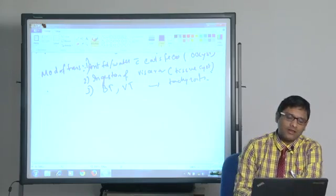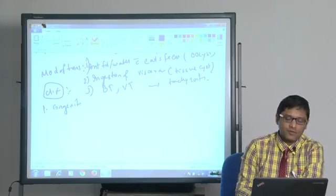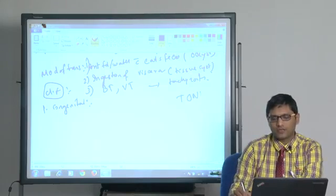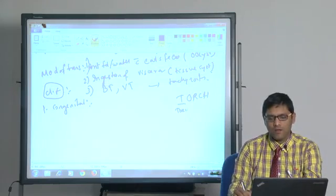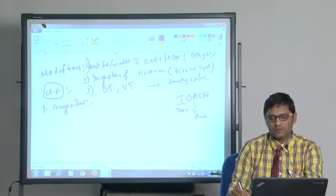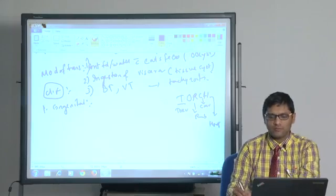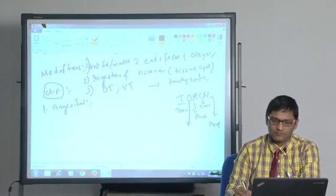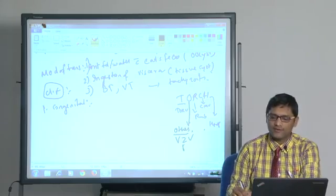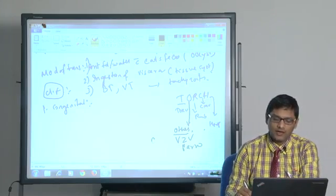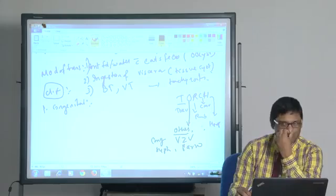Regarding the clinical manifestation, congenital toxoplasma is one of the TORCH agents. What is TORCH? T for toxo, R for rubella, C for cytomegalovirus, H for herpes, O for others like varicella zoster virus, parvovirus, and congenital syphilis. All these will come under the other category.